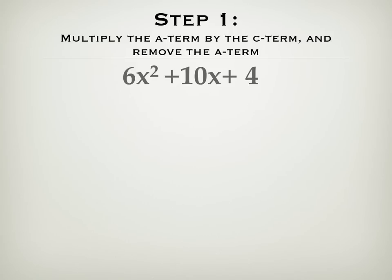The first step in this is to multiply the a term, 6, by the c term, 4. This gives us x squared plus 10x plus 24.